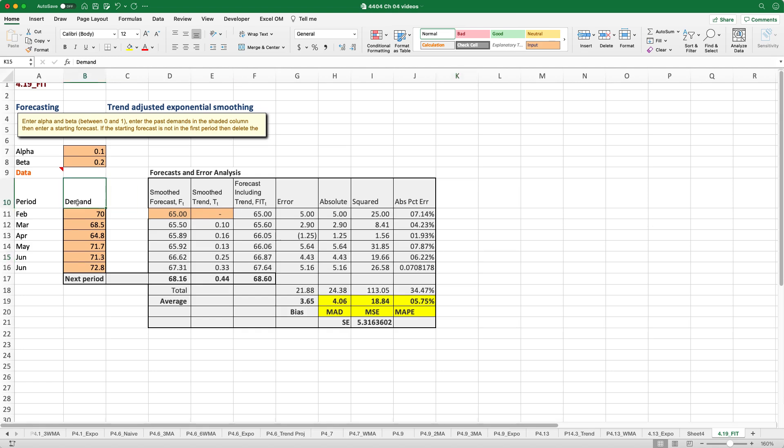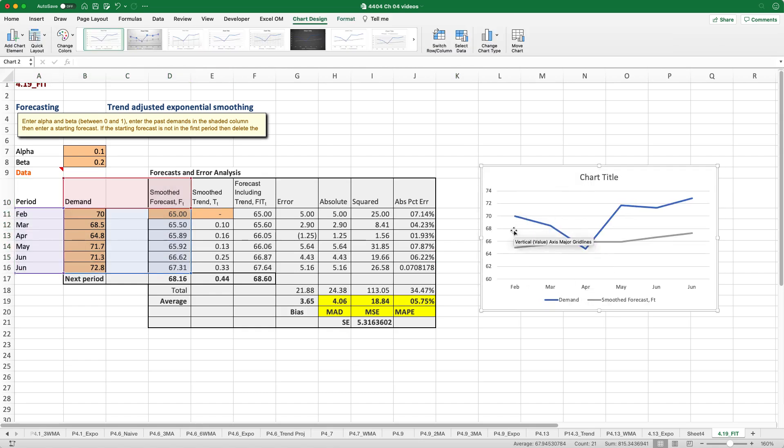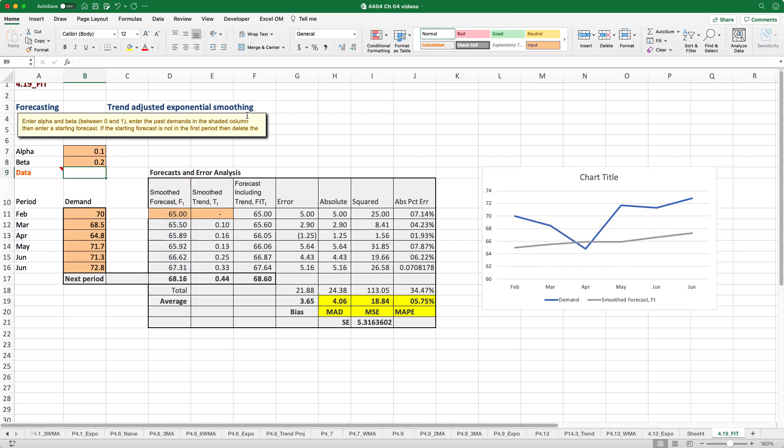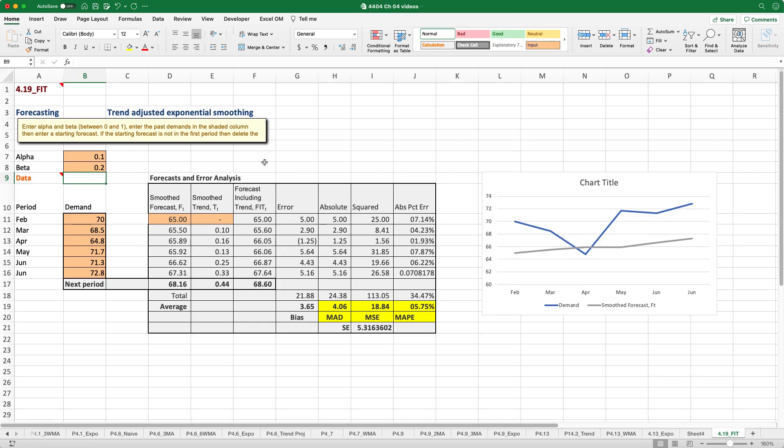If we were to quickly graph these, where we have our periods of demand and our smooth forecast, you can see that our demand varies quite a bit. It drops significantly into April. And what this does is provide a smoothing of that forecast, but also factors in any previous trends. And there you have it, trend-adjusted exponential smoothing.